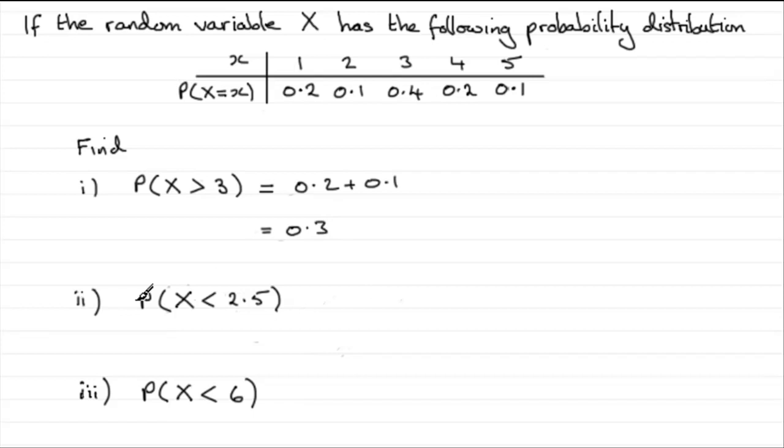But what about this one here? The probability that X is less than 2.5. Now you can only get these numbers 1, 2, 3, 4, and 5. 2.5 isn't in the list.